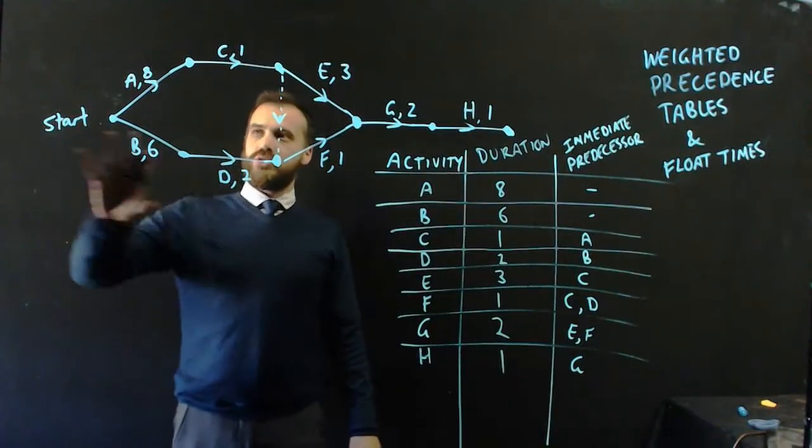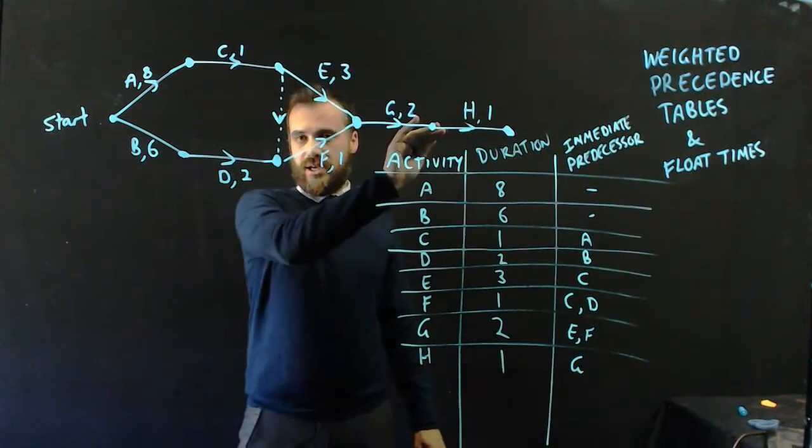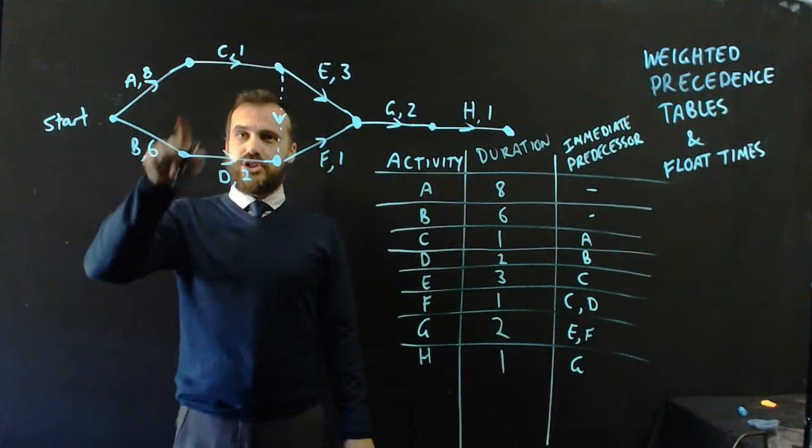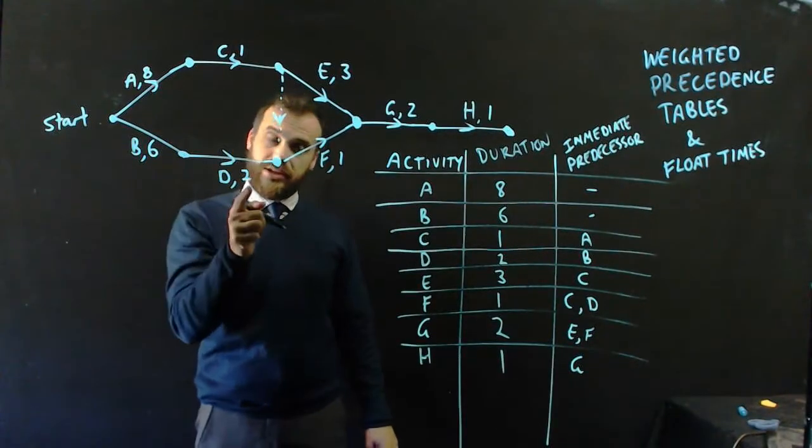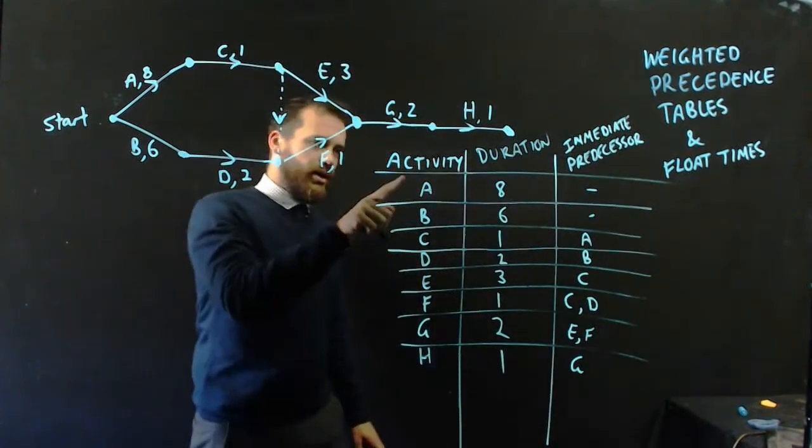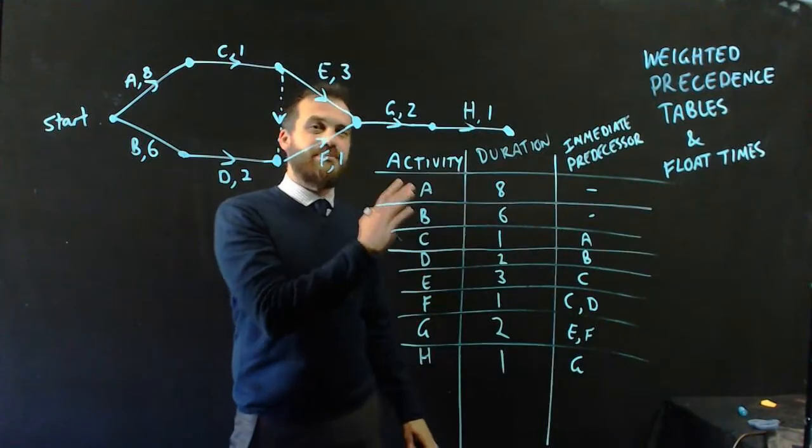Okay, so what have I done so far? I've looked at what's called a weighted activity network, which is just like the other activity networks we've done, but now we have durations for each of our activities. And now I've created what's called a weighted precedence table, with this duration column in the middle.